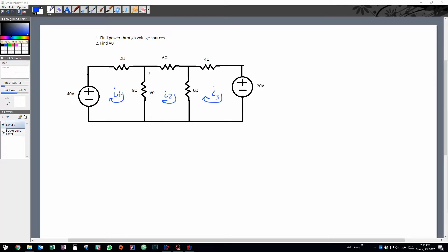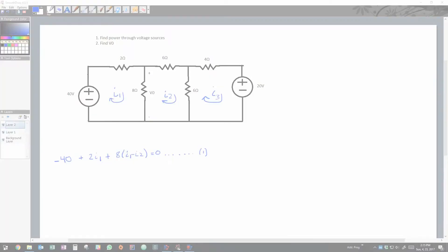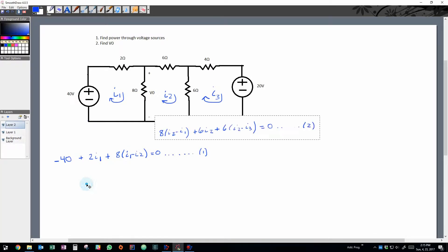And if we look at i1, starting with the voltage source on the left going clockwise, we're going to have negative 40 plus i1, which is a current, times the resistance, which is equal to the voltage. So i1 times 2.